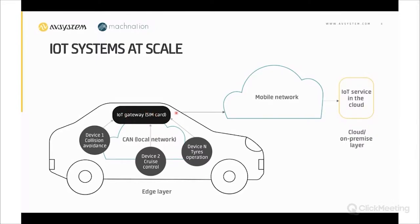These devices communicate over a local network with a central component that plays the role of an IoT gateway. This gateway uses a mobile network to talk with the IoT service located in the cloud. The gateway can also execute custom logic — aggregating data from multiple devices, filtering information, and providing artificial intelligence functionality.